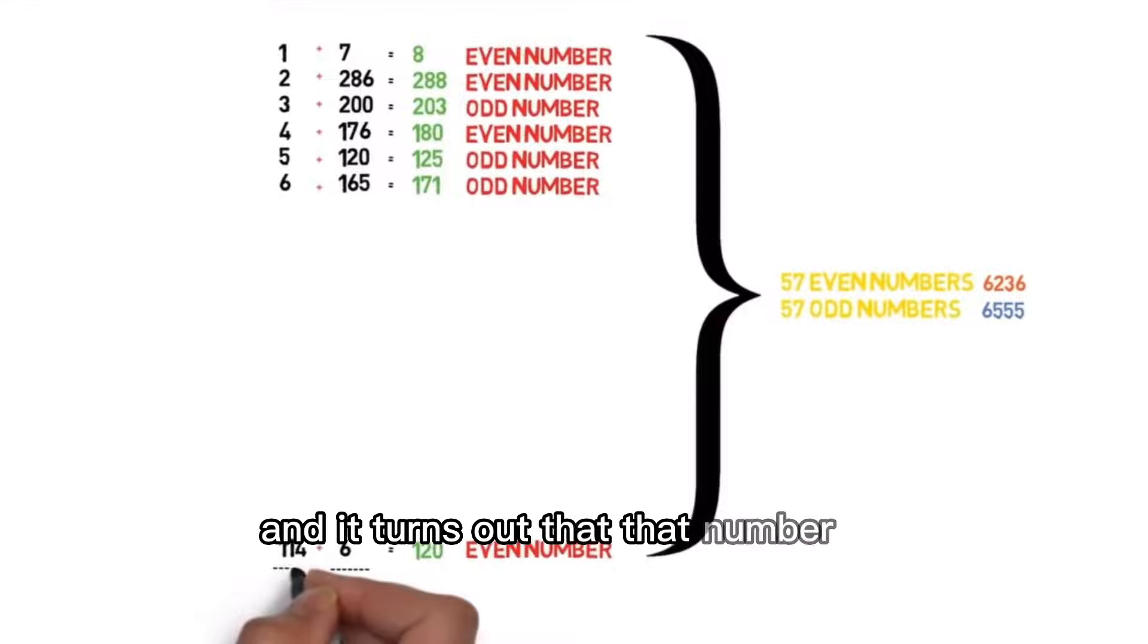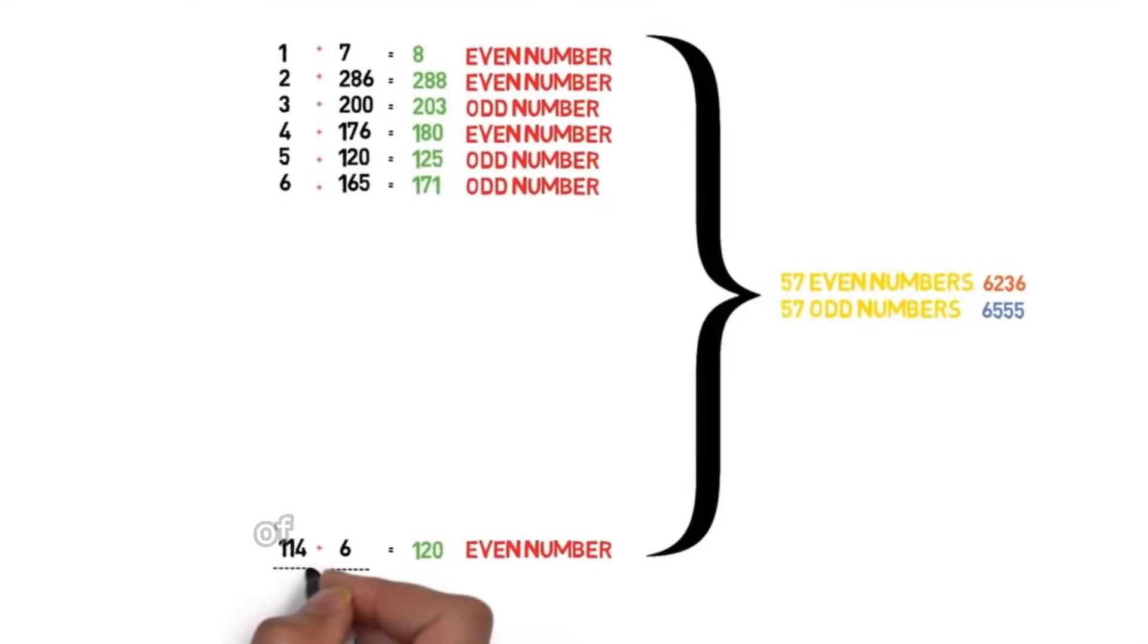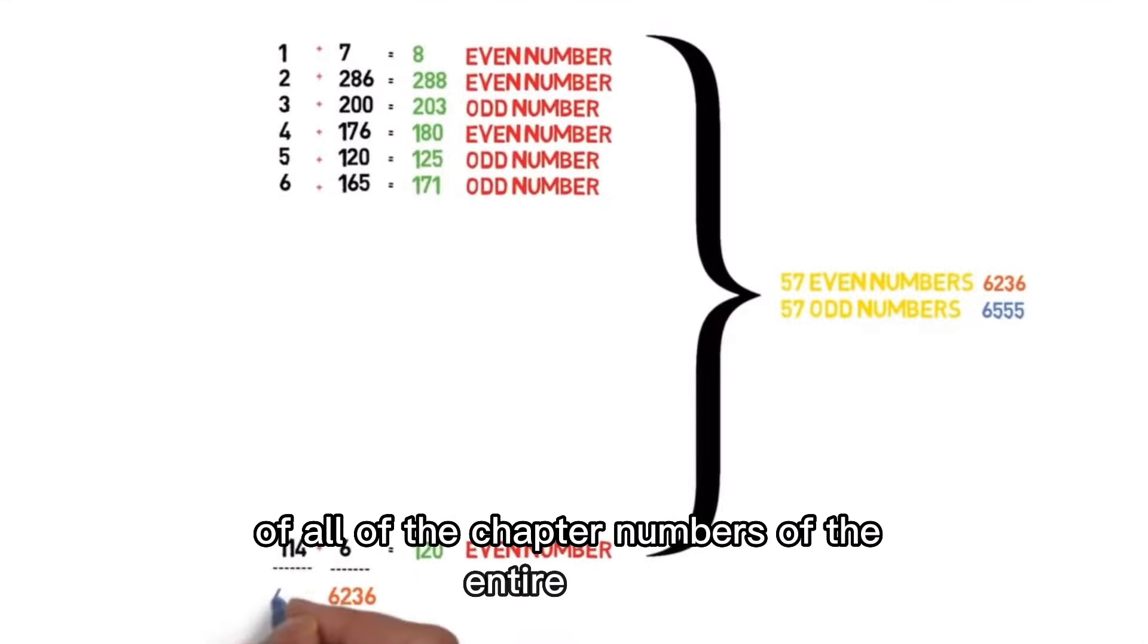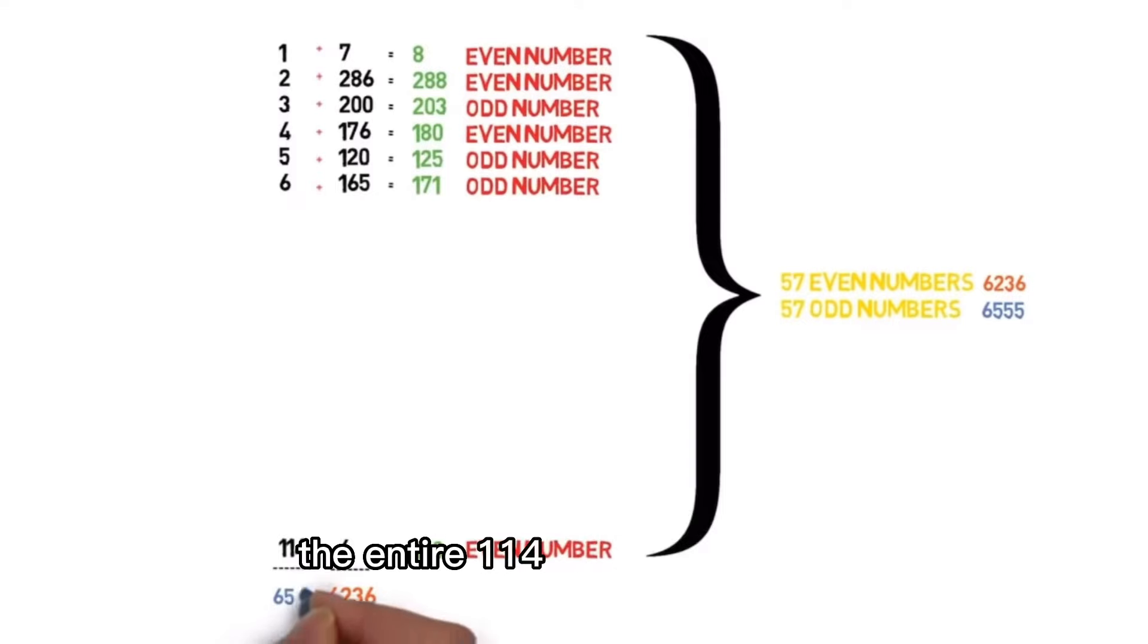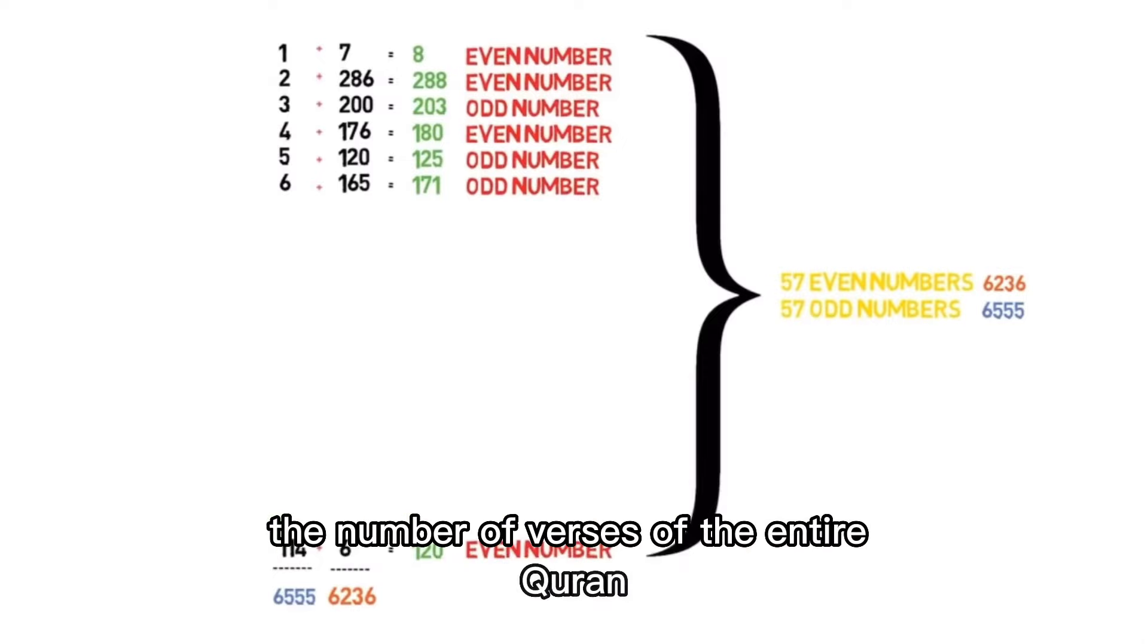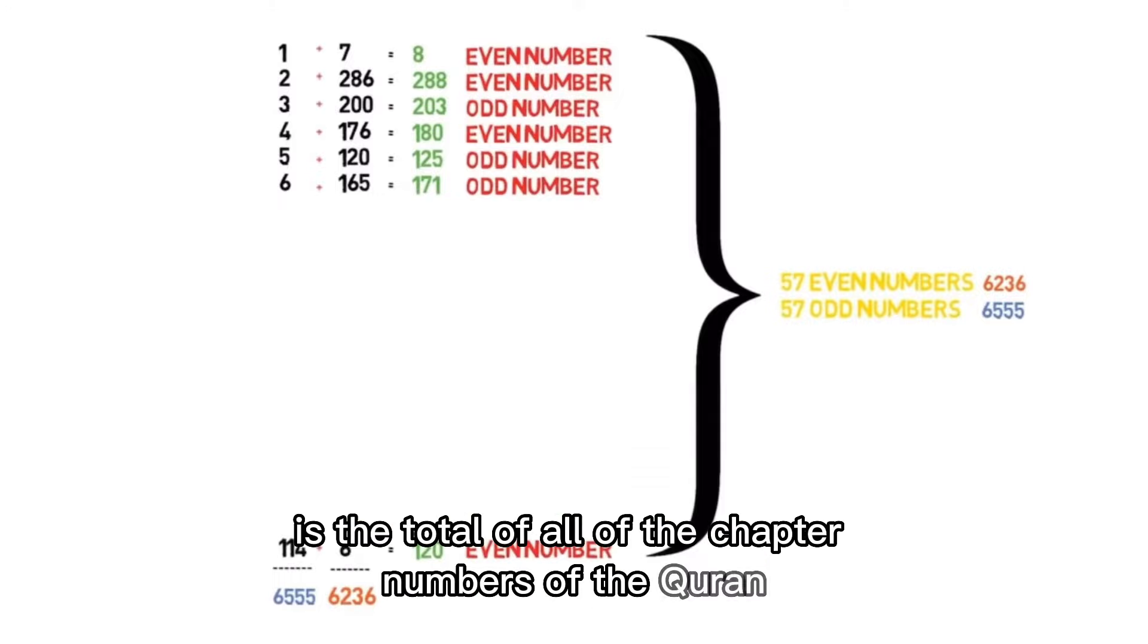It turns out that that number is the grand total of all of the chapter numbers of the entire Quran, the entire 114 chapter numbers. How did this fine balance occur so that not only do we have an even number of even and odd results, but the even results total the number of verses of the entire Quran and the odd number results is the total of all of the chapter numbers of the Quran.